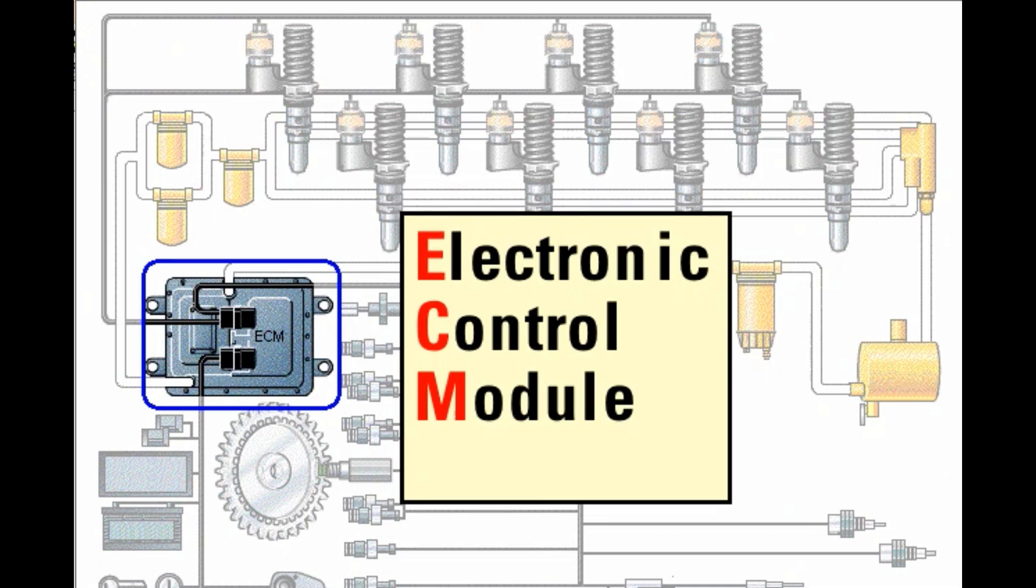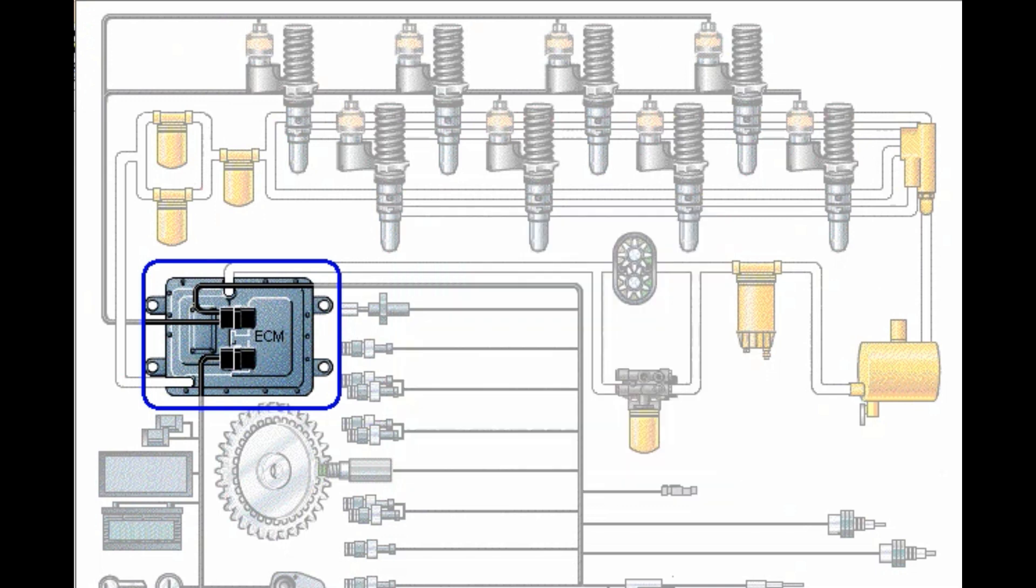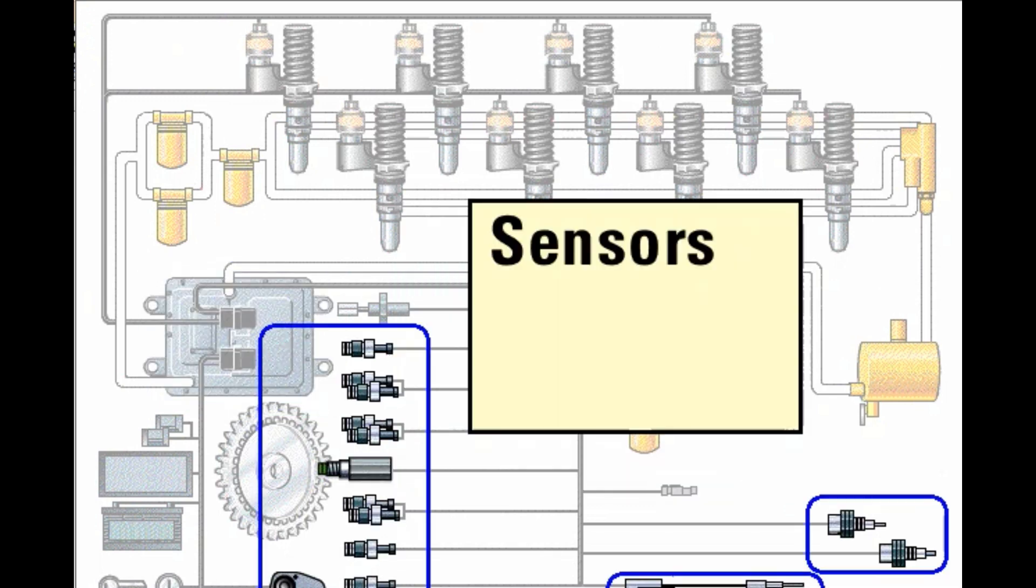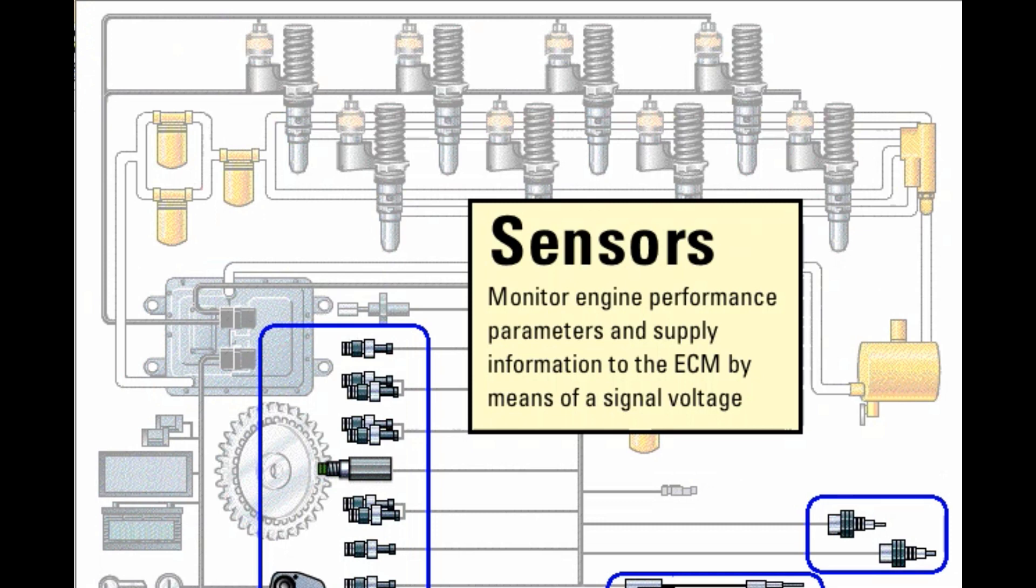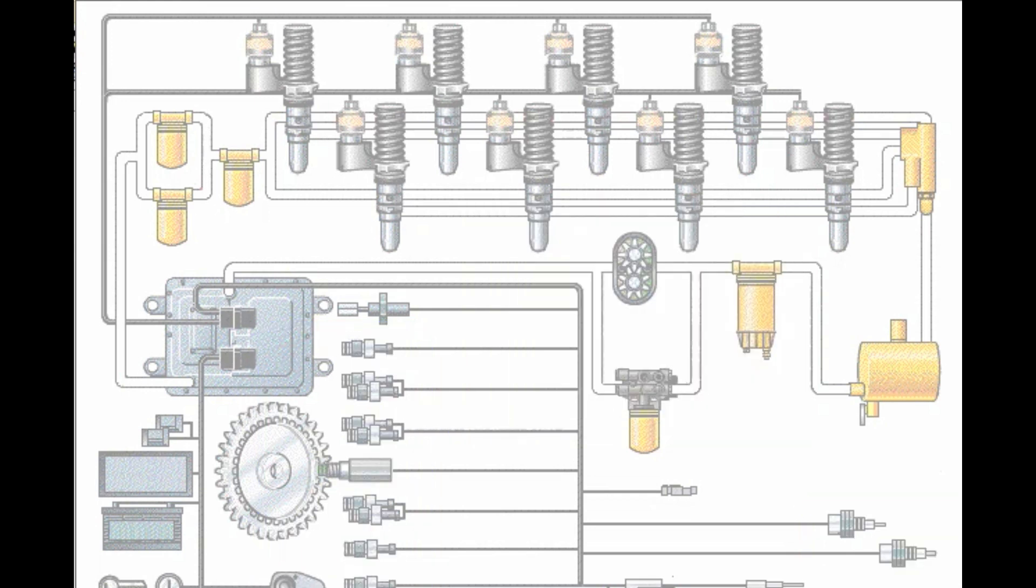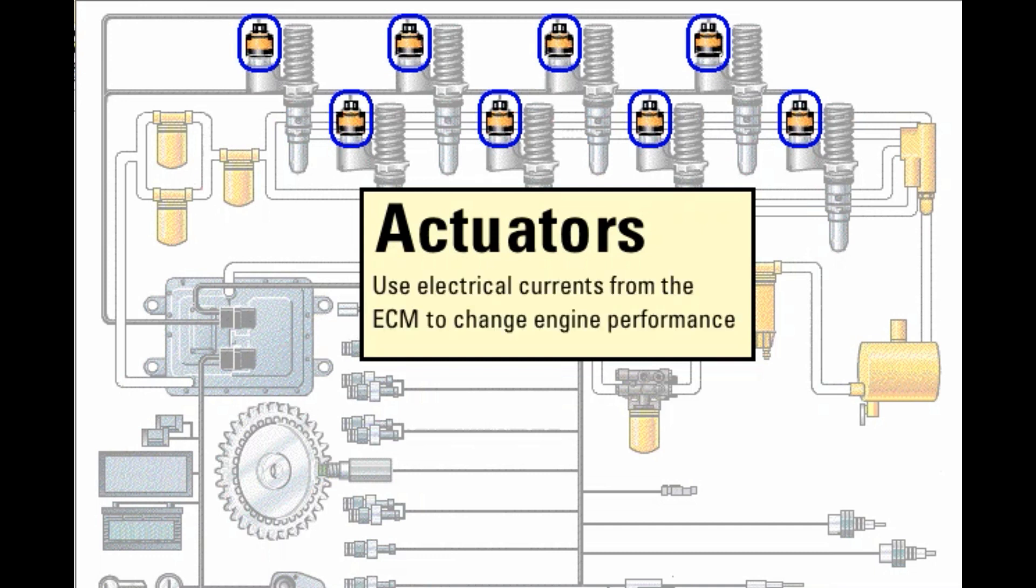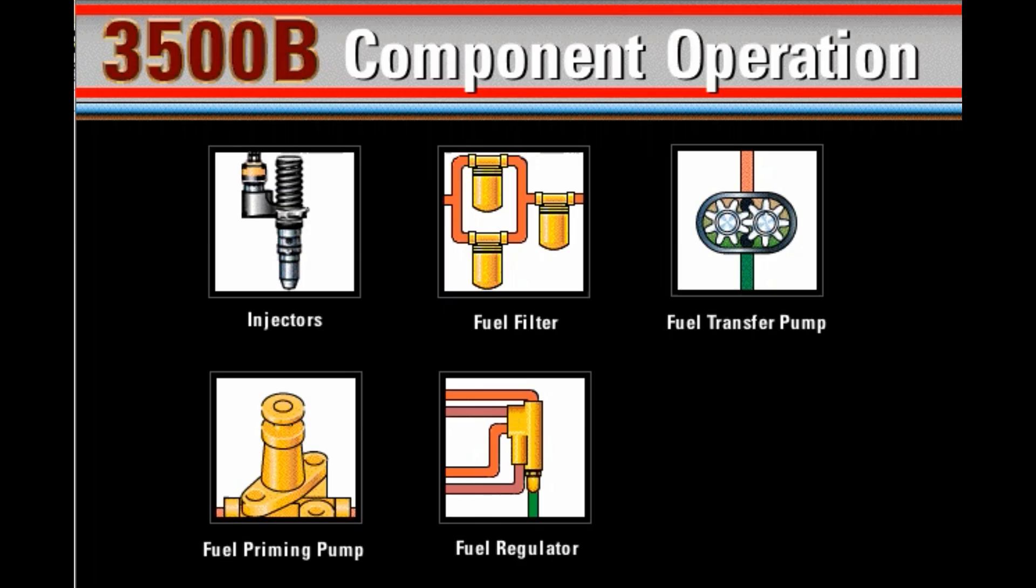The ECM is a powerful computer which controls all major engine functions. Sensors are electronic devices which monitor engine performance parameters such as pressure, temperature, or speed and supply this information to the ECM by means of a signal voltage. Actuators are electronic devices which use electrical currents from the ECM to change engine performance. An example of an actuator is the injector solenoid.